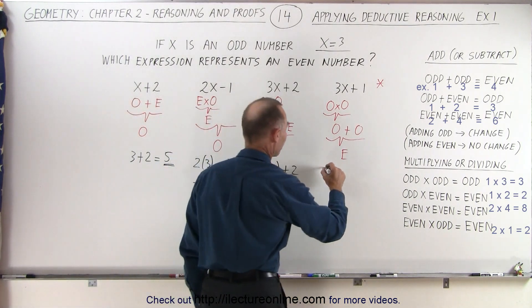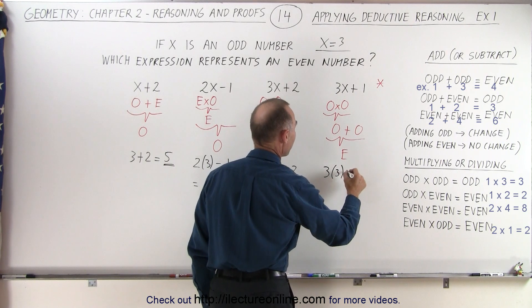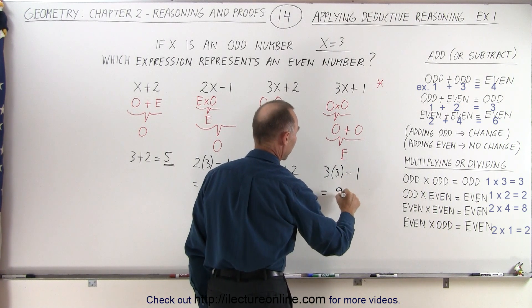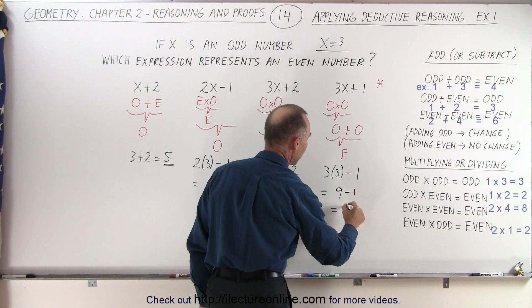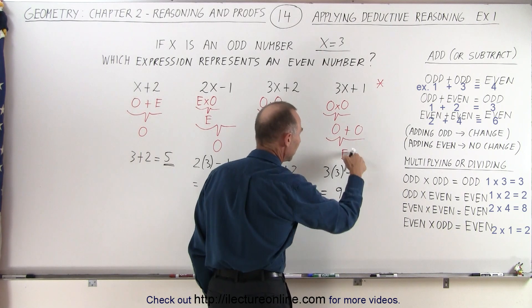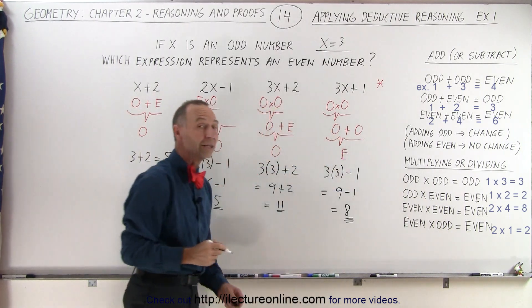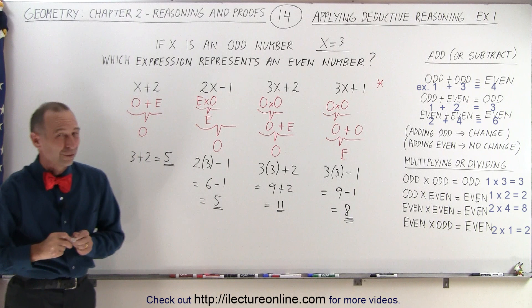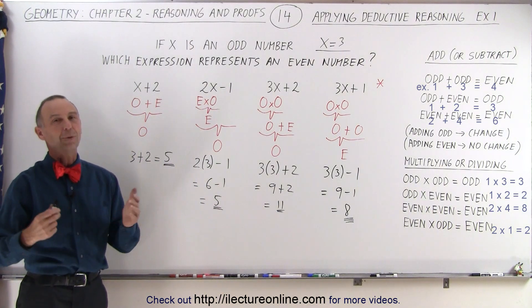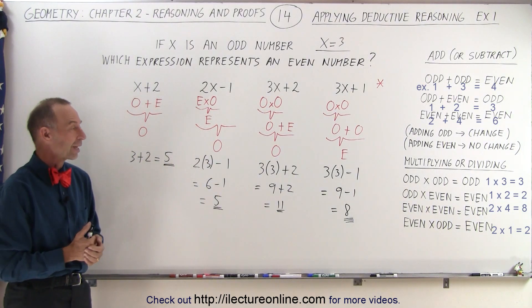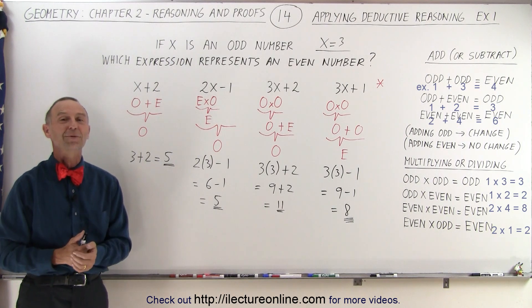Next number. So we have 3 times 3 minus 1, which is equal to 9 minus 1, which is equal to 8. And sure enough, 8 is an even number, so we found the correct answer. It's always a good idea to check out your answers in any way you can, just to make sure it was correct. And that is how it's done.